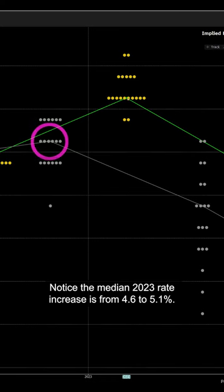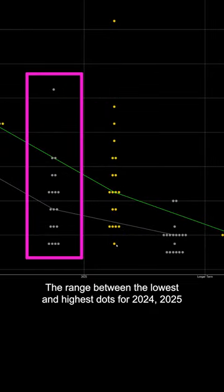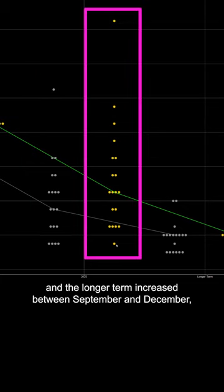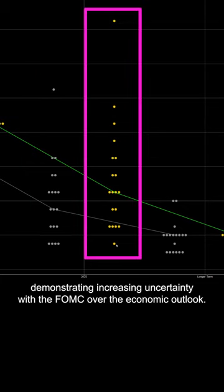Notice the median 2023 rate increases from 4.6% to 5.1%. The range between the lowest and highest dots for 2024, 2025, and the longer term increased between September and December, demonstrating increasing uncertainty within the FOMC over the economic outlook.